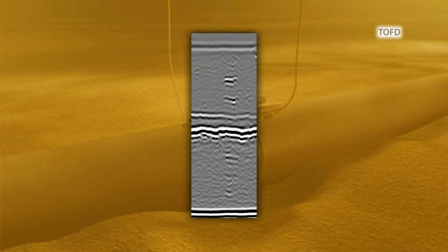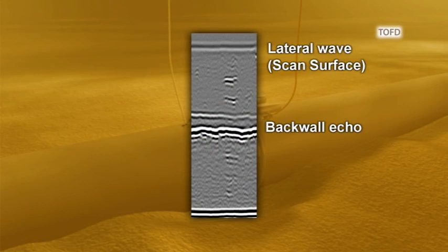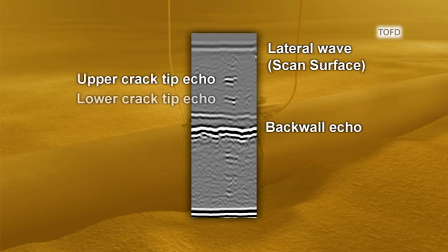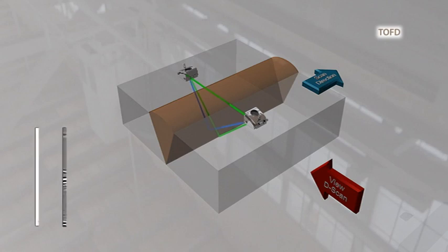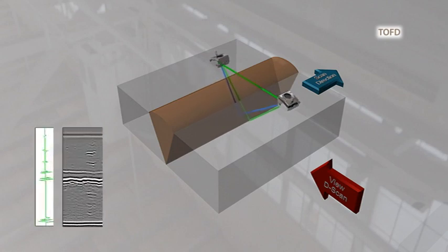This image shows: A. Lateral wave, B. Back wall echo, C. Upper crack tip echo, D. Lower crack tip echo, E. Shear wave response. Every millimetre, an A-scan is fired through the steel between the transmitting and receiving transducers for the full length of the scan, using an encoder to ensure accurate measurement.